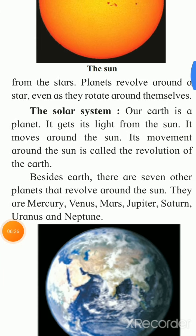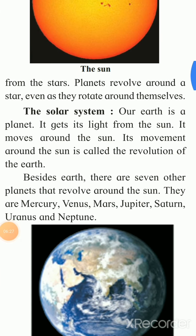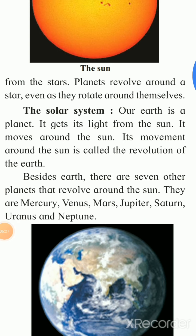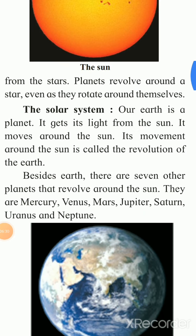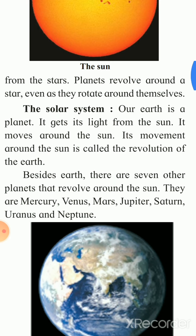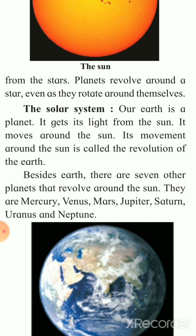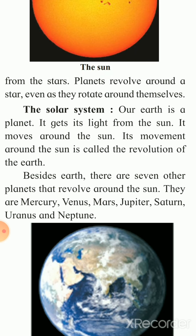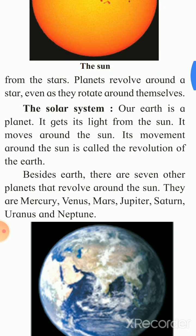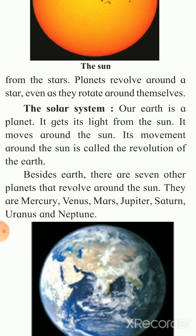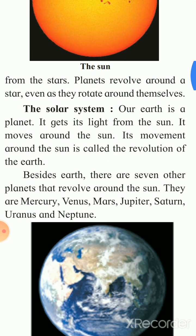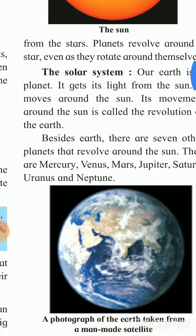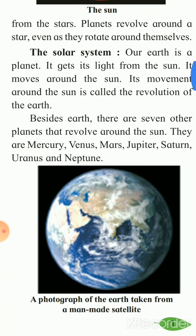Besides Earth, there are seven other planets that revolve around the sun. Including Earth, there are eight planets in total. They are Mercury, Venus, Mars, Jupiter, Saturn, Uranus, and Neptune.